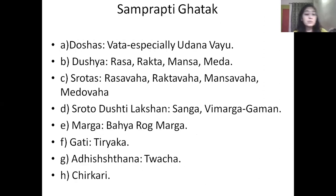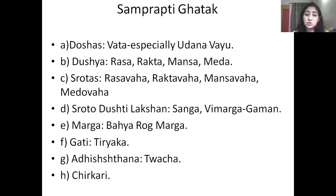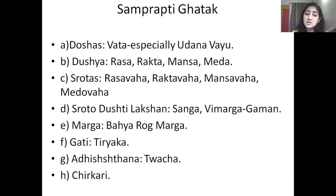Now coming to the Samprapti Ghatak. Doshas which are basically involved are Vata, especially Udana Vata. Dushya includes Rakt, Rakta, Maans and Medha. Srotas involved are Raktavaha, Maamsavaha and Medovaha; all four types of Srotas are involved. Sroto-dushti Lakshana is seen as Sang and Vimarga Gamana. Marga is Bahya Roga Marga, Gati is Priyak, Adhisthana is Twacha, and nature of the disease is Chirakari.